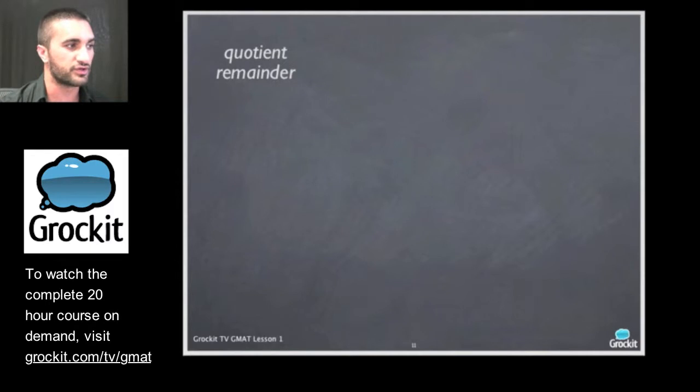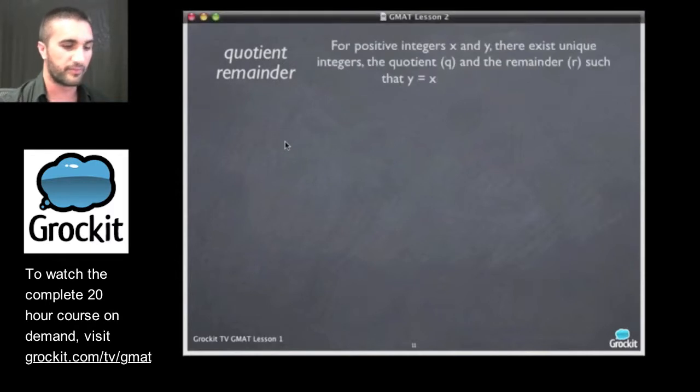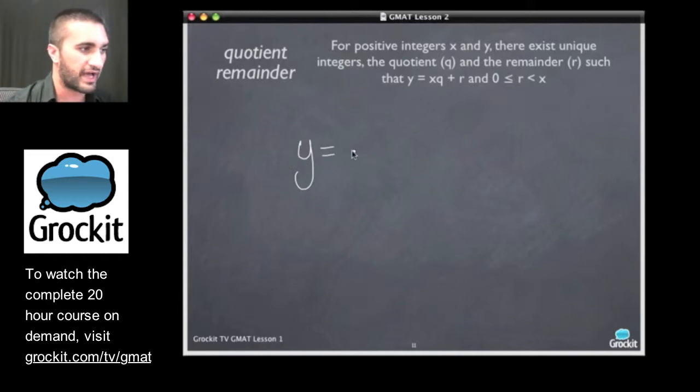Talking a little bit about quotient and remainder, we remember we had this equation here: y equals xq plus r. Let's come up with some numbers. We have x, we have y, we have q, we have r.